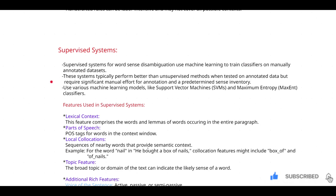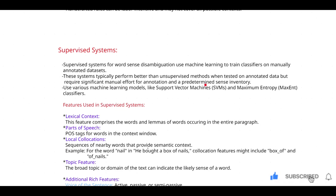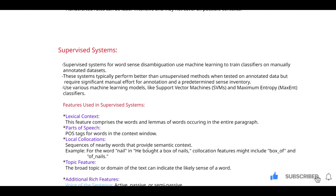The second point: supervised systems typically perform better than unsupervised methods when tested on annotated data, but they require significant manual effort for annotation and a predetermined sense inventory. The only disadvantage of supervised systems is that they require a huge manual effort.